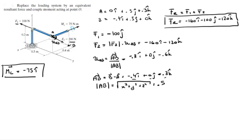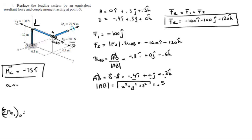We need to find two more moments. The moment F1 creates about O is given by vector OL cross F1. This vector OL is simply going up 0.3 meters in the k direction, so OL = 0.3k.